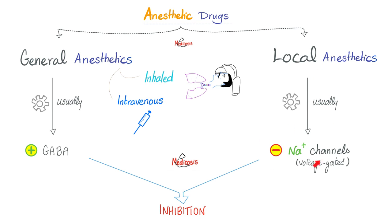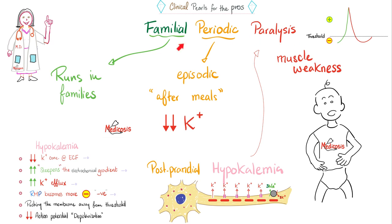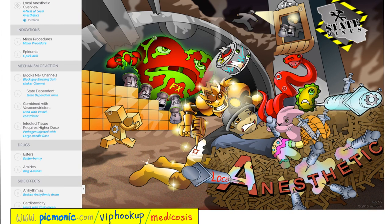Local anesthetics also block the sodium channels. Familial periodic paralysis was discussed before. What's the solution? Give the baby potassium. Let's review some local anesthetics from Picmonic. Let's go. Local anesthetics are used for minor procedures. They are also used for epidural anesthesia. How do they work? They block the sodium channels. Block sodium. Usually combined with vasoconstrictors such as epinephrine. Look at this constrictor right here. Some of the local anesthetics are esters, the Easter bunny. Others are amides. Side effects include arrhythmias, here is your sad heart, and cardiotoxicity.